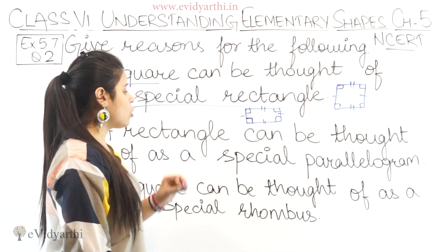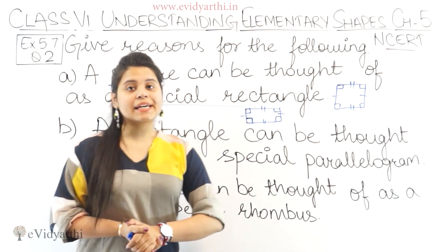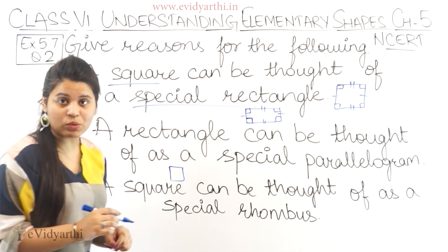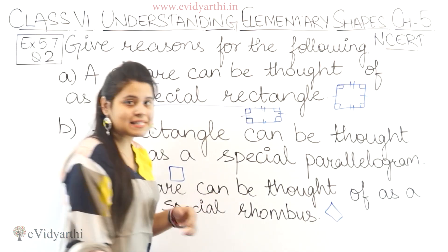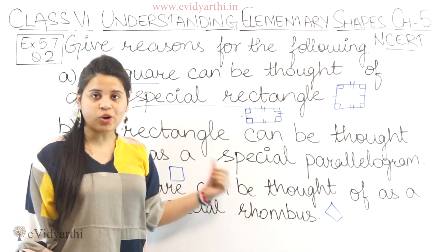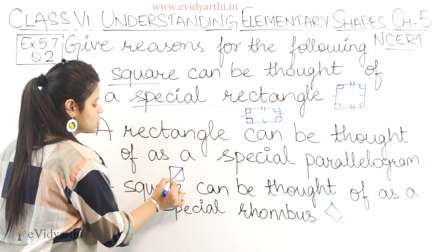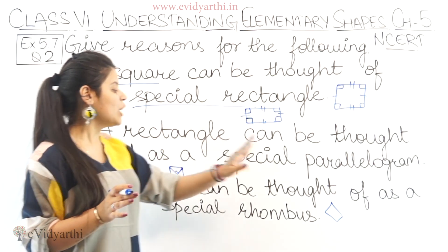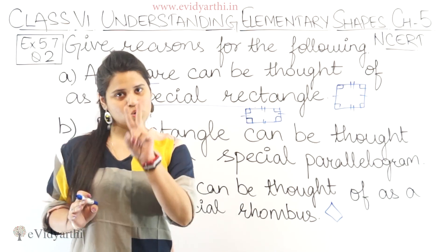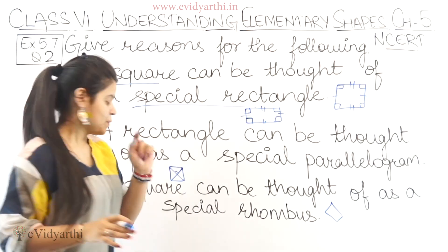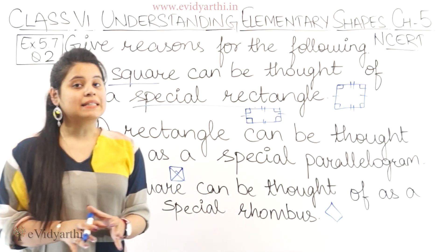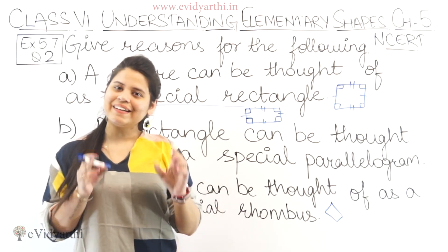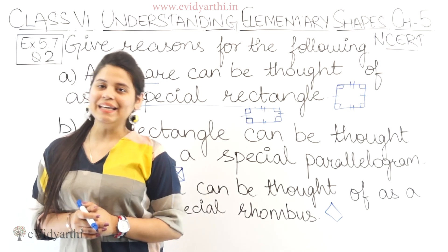Next: a square can be thought of as a special rhombus. Yes, because just like a square has all sides equal, similarly a rhombus also has all sides equal. Also, the diagonals of a square are perpendicular to each other — similarly the diagonals of a rhombus are also perpendicular. So the reason is: diagonals are perpendicular and all the sides are equal.